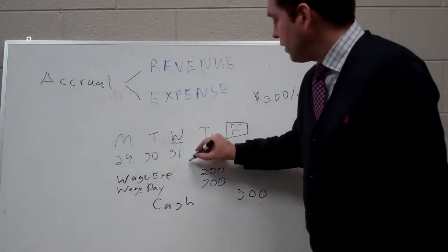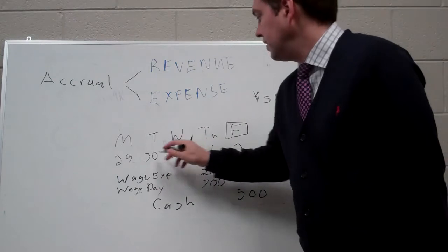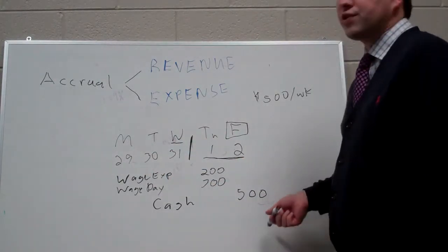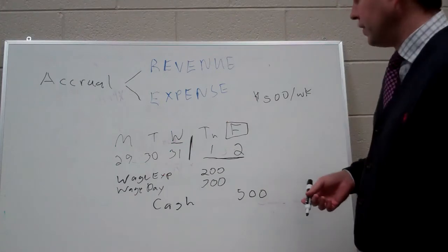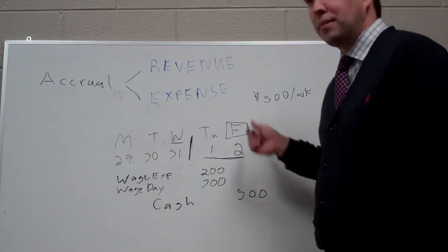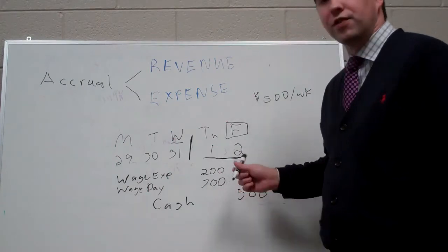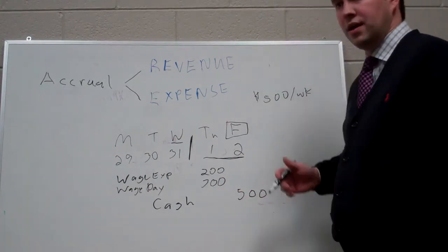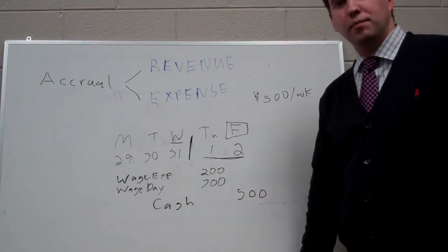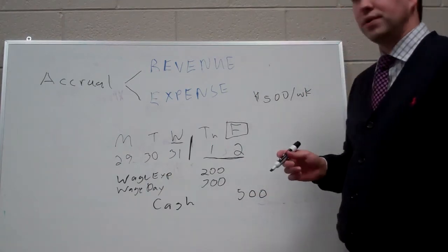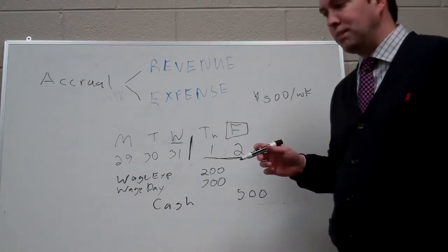We've recorded the right amount of expense in December and in January. We've reduced our cash for the amount we paid employees. And we set that liability up on the books in December and took it off the books in January on payday. That's a good example of a wage or salary accrual. It's also a great example of an accrued expense.